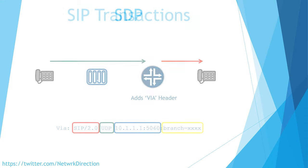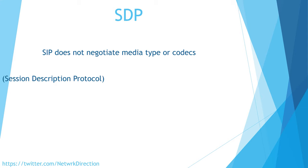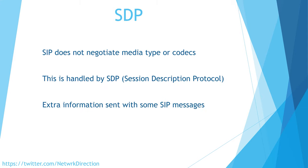An interesting fact about SIP is that it doesn't care about what type of media the phone call will use — it doesn't care if it's voice or video traffic, what codec will be used, or any of it. All it wants to do is get all the parties involved to set up that call. But this information still needs to be negotiated between endpoints, so if SIP doesn't handle this, what does? The answer is SDP — a separate protocol that works hand in hand with SIP. It's extra information that can be sent along with certain SIP messages, and technically it can also be used with other protocols like HTTP.